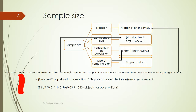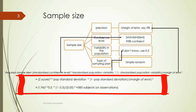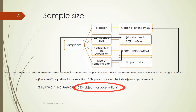For example, the z-score for the 95% confidence level is 1.96. If you don't know the population standard deviation, we take 0.5. Then we take 1 minus 0.5, and if the margin of error is 5%, we divide by 0.05, and square the result. What we get is 385 subjects or observations required in the sample.